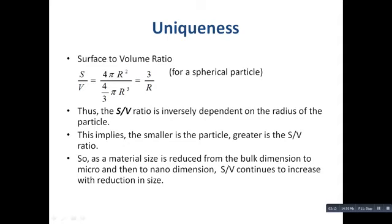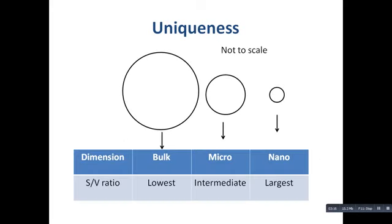Here in this slide, a comparison has been shown — note that this comparison is not to scale. If we consider three scales — bulk, micro, and nano dimensions — and compare their surface-to-volume ratios: bulk has the lowest surface-to-volume ratio, micro has an intermediate surface-to-volume ratio, and nano has the largest surface-to-volume ratio among all three scales.